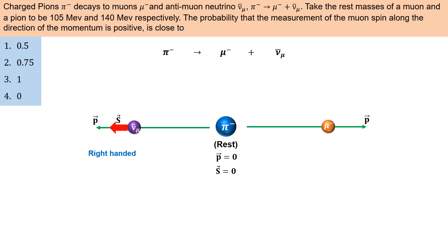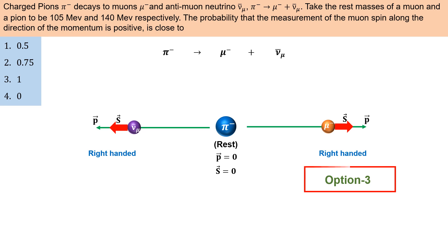Now, helicity को conserve करने के लिए muon का spin भी उसके motion की direction में होना जरूरी है। That means muon का spin और momentum दोनों एक ही direction में होंगे। तो अगर इस decay reaction में muon के spin को measure किया जाए, तो muon का spin हमेशा ही उसके momentum की direction में ही मिलेगा। That means 100% probability है कि muon का spin उसके momentum की direction में ही measured हो।